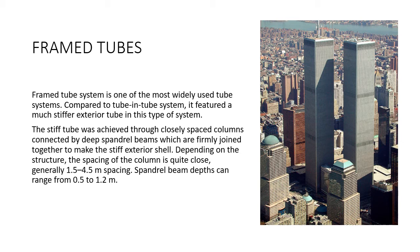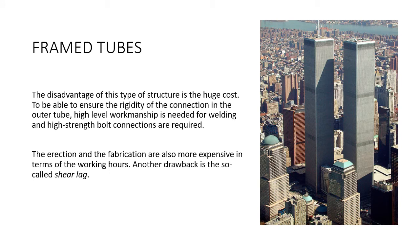Depending on the structure, the column spacing is quite close, generally 1.5 to 4.5 meters. Spandrel beam depth can range from 0.5 to 1.2 meters. The disadvantage of this type of structure is the high cost. To ensure rigidity of the connection in the outer tube, high-level workmanship is needed for welding, and high-strength bolt connectors are required. Erection and fabrication are also more expensive in terms of working hours. Another drawback is the so-called shear lag effect.